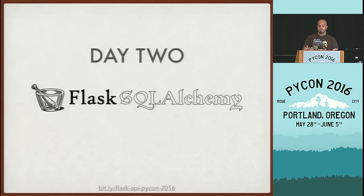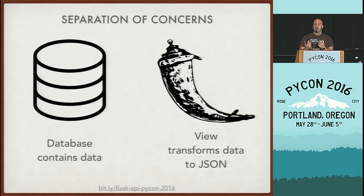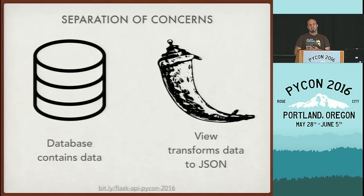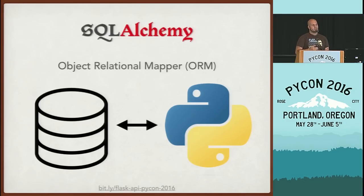Let's start day two by adding another piece of complexity to our code base. We're going to use a Flask extension called Flask SQLAlchemy. The general idea is we want to separate our concerns — we want the Python code to operate on the views, and we want the data outside of the Python code in a database. Databases are great for holding data, and this allows you to modify the data the API represents without modifying the Python code. SQLAlchemy is an object-relational mapper.